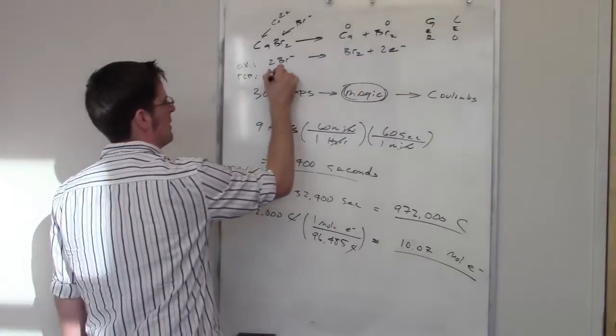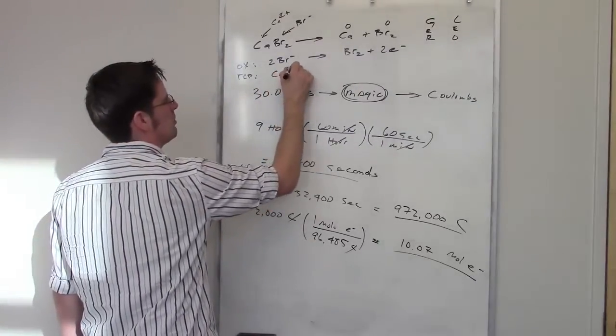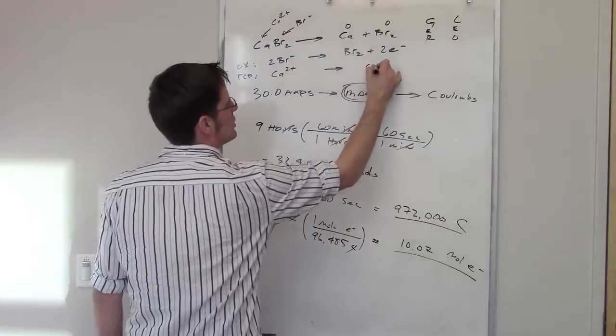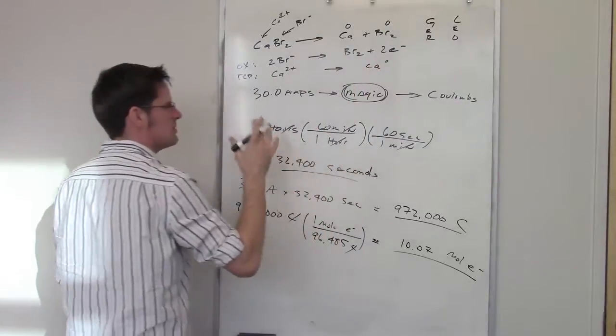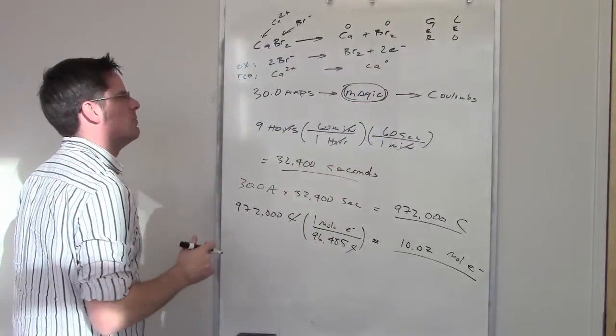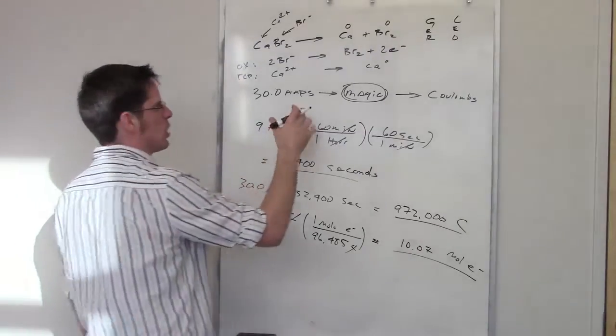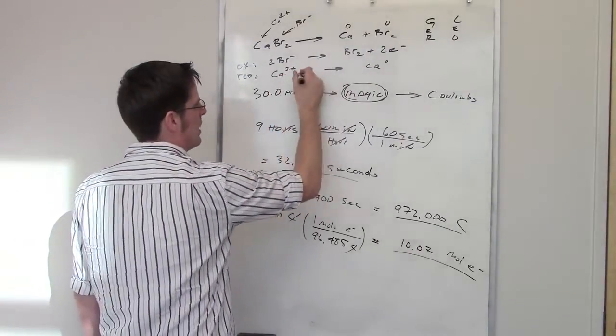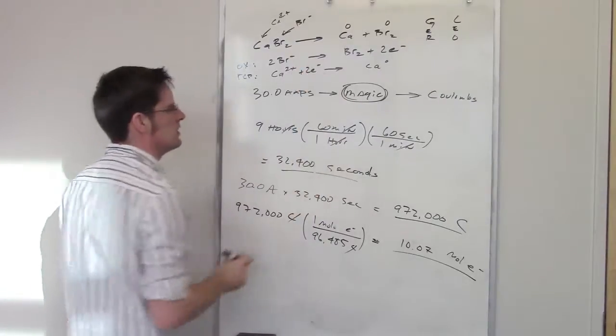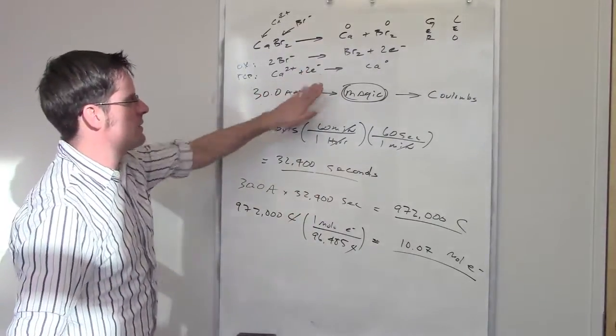Now, I've got separately my reduction. I've got calcium two plus doing some stuff to turn into calcium zero, calcium zero. So balance-wise, that's pretty good. I have to throw some electrons down, though, to get the charge to balance. I've got two plus on the left, zero on the right. I'm going to have to throw down two electrons on the left to get that to balance charge-wise.